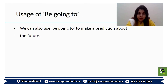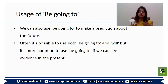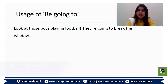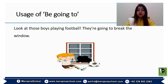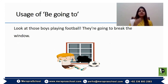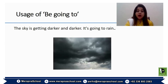We can also use 'be going to' to make a prediction about the future. It's more common to use 'be going to' when we can see evidence in the present. For instance, 'Look at those boys playing football — they are going to break the window.' Based on how they are playing, we predict what will happen. Another example: 'The sky is getting darker and darker — it's going to rain.'